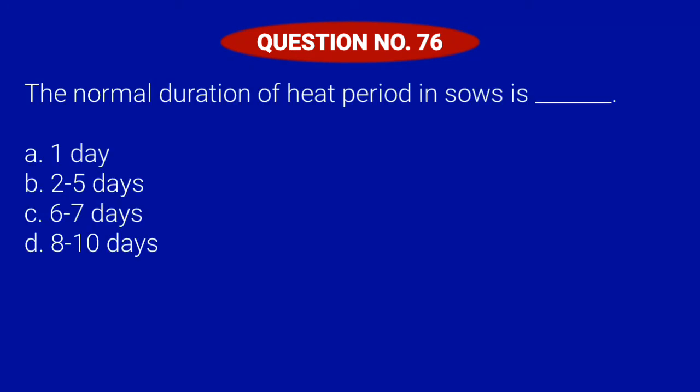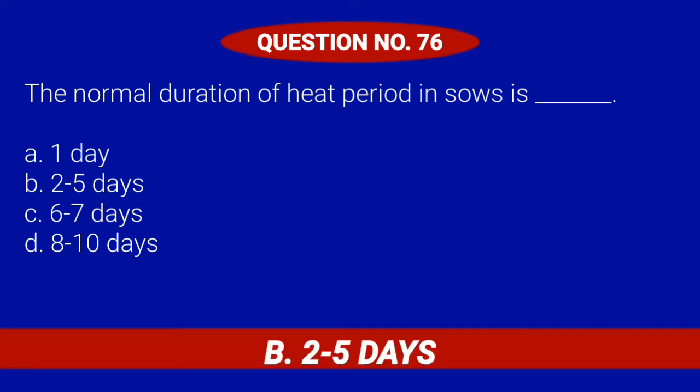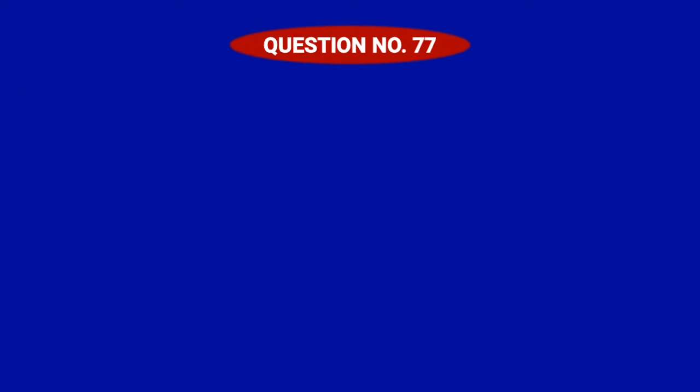Question number 76. The normal duration of heat period in sows is blank. Letter A: One day. Letter B: Two to five days. Letter C: Six to seven days. Or Letter D: Eight to ten days. Correct answer is Letter B: Two to five days.